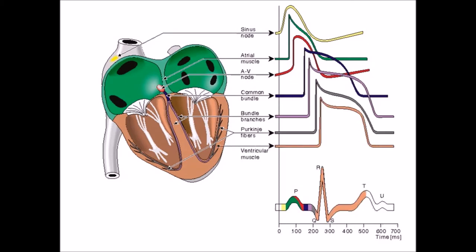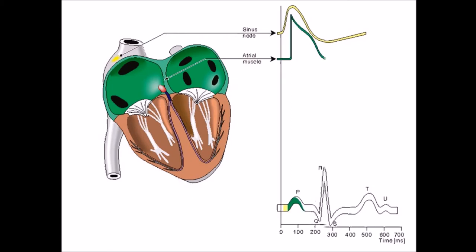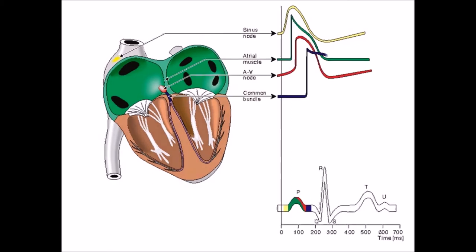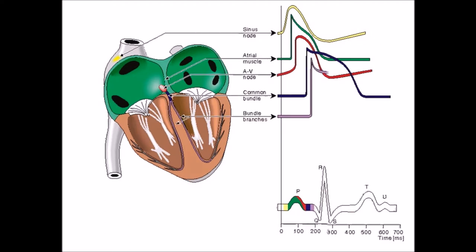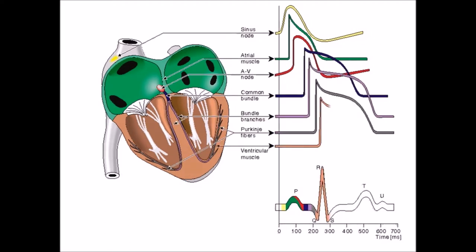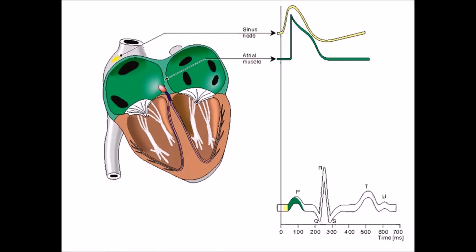The sinoatrial node is located in the right atrium near the opening of the superior vena cava. This is a collection of specialized cells that is able to generate the electrical signal to initiate a heartbeat. The sinus node is the natural pacemaker of the human body. From here, the electrical signals spread from the right atrium to the left atrium, making the right and left atria contract and pump blood to the ventricles.